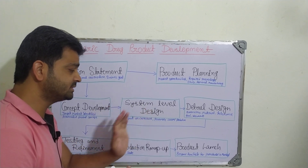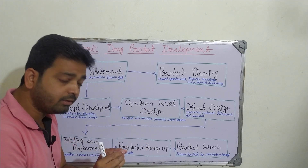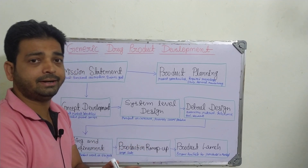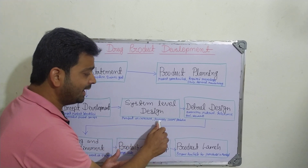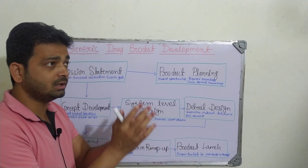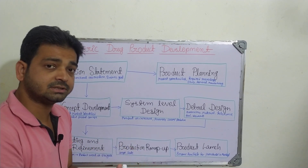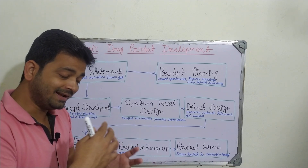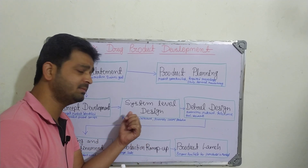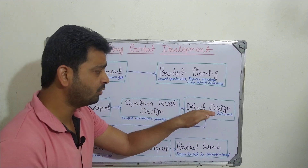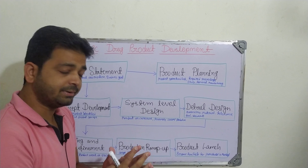Once concept development is complete, we need to go for system level design. This includes product architecture — what is going to be the dosage form, what are the required machineries, raw materials, methods, assembly scheme, and schematic presentation — how we are going to manufacture and how we are going to collect the data of the particular study. All those things have to be designed in the system level design.